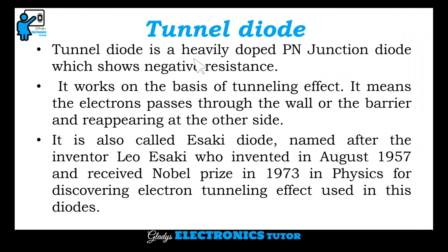Tunnel Diode is a heavily doped P-N junction diode which shows negative resistance. It works on the basis of tunneling effect — it means the electrons pass through the wall or barrier and reappear at the other side. It is also called Esaki Diode, named after inventor Leo Esaki who invented it in August 1957 and received the Nobel Prize in 1973 in physics for discovering the electron tunneling effect used in this diode.